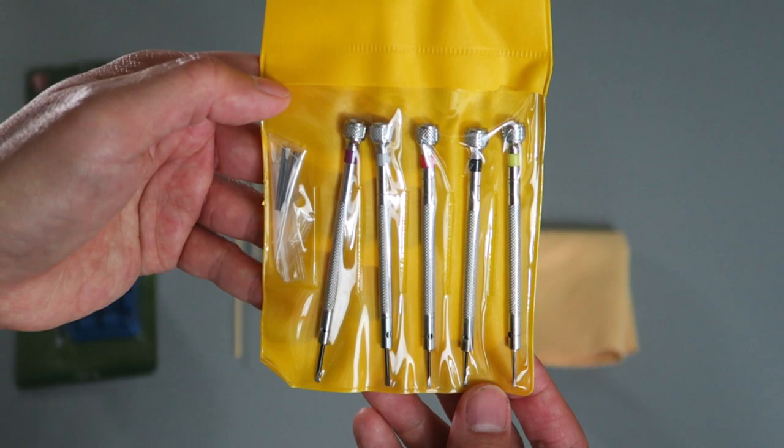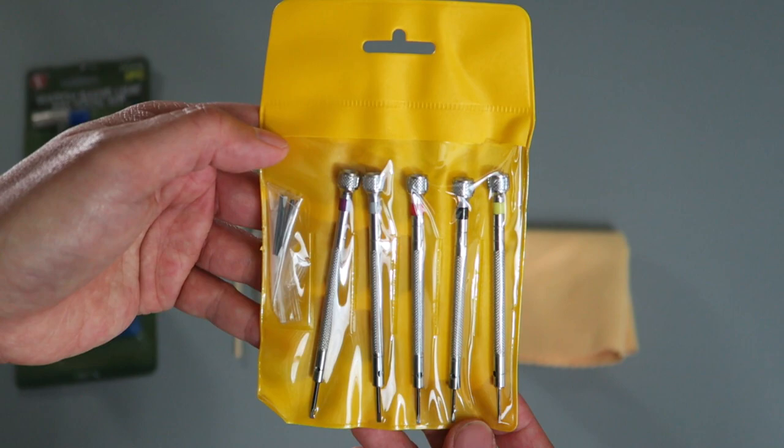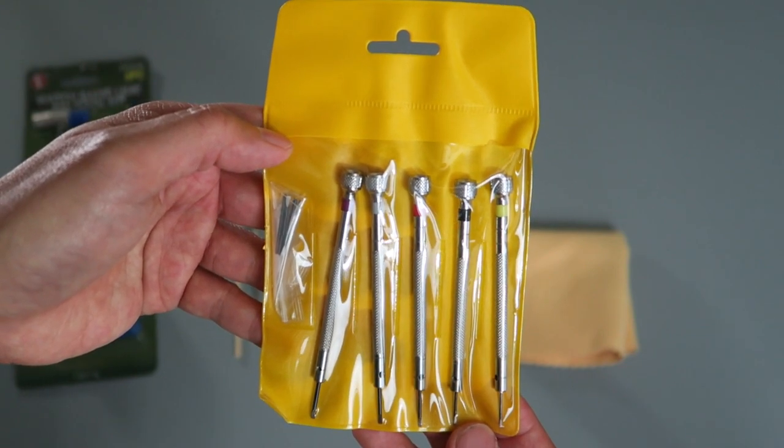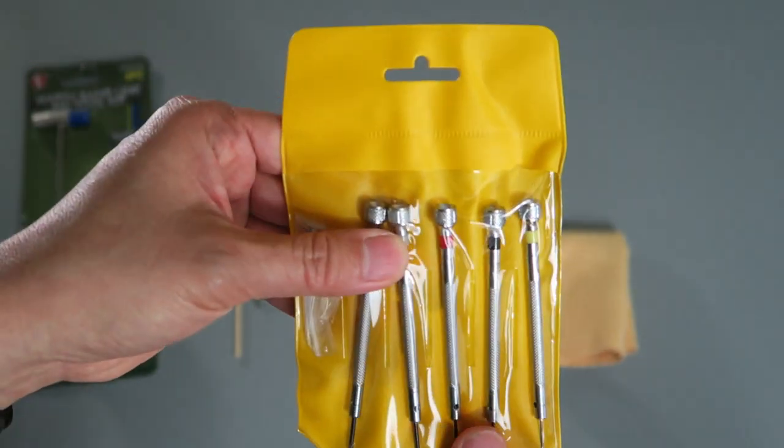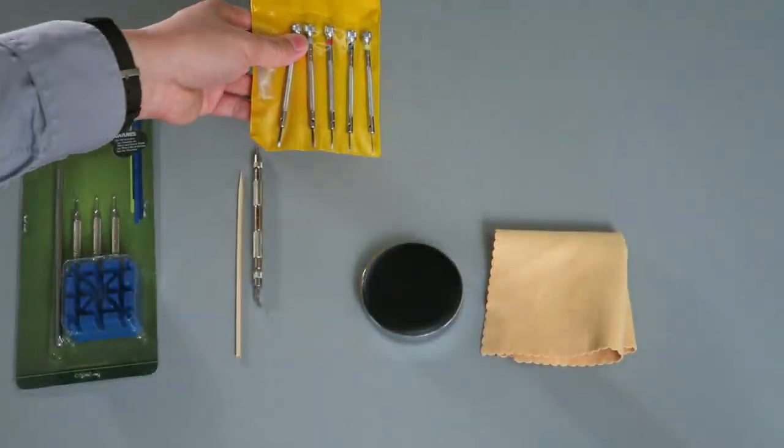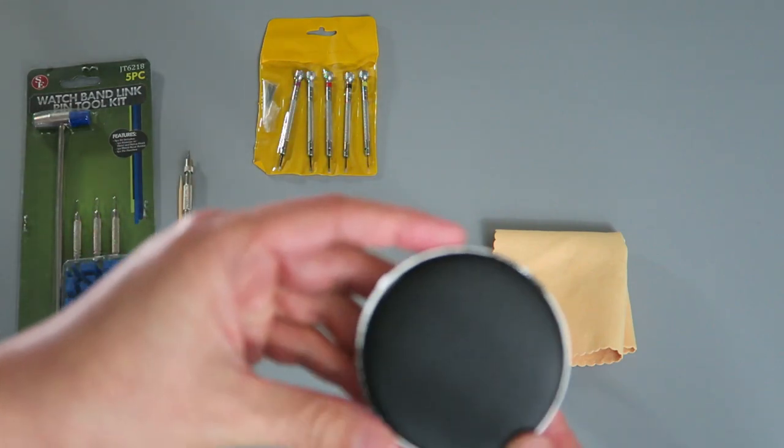You'll want to use the right size flat head screw for the pins that your watch has. If you use one that's too small you might end up stripping the flat head screw head. So you definitely want to have some of those on hand and you can get those fairly cheap as well.